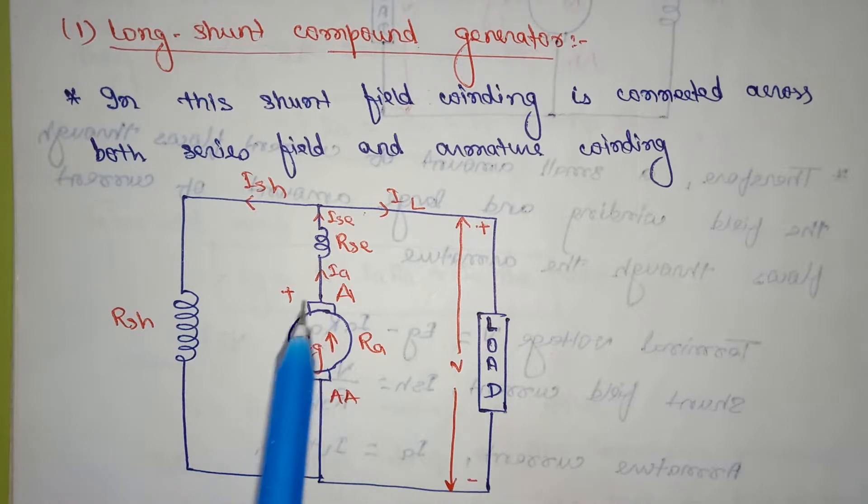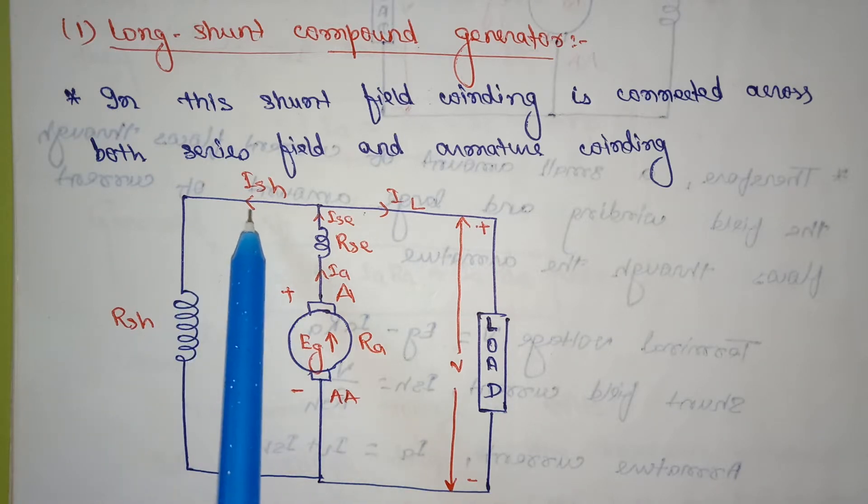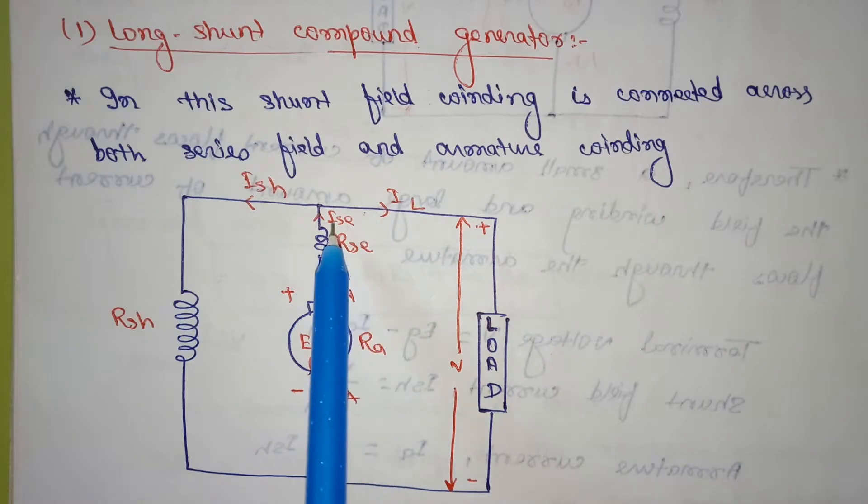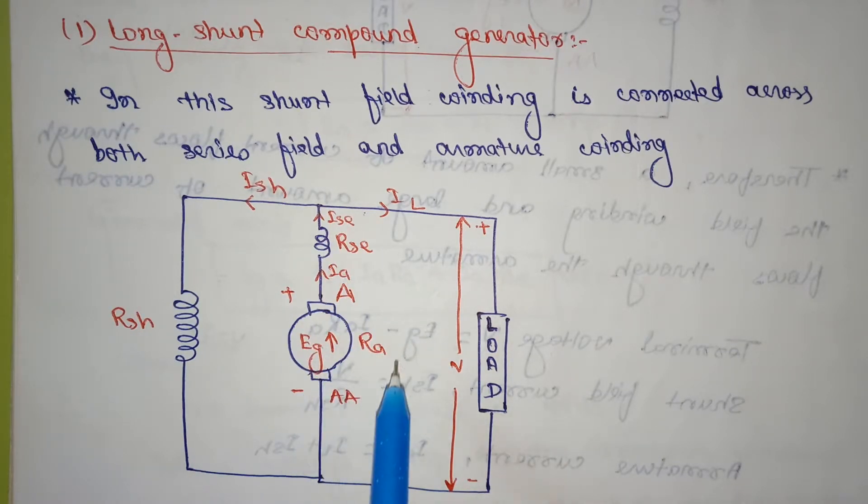So this is the shunt resistance, this is the shunt current, this is the load current, the series current, series resistance, armature current, generated emf, and this is armature resistance. From the diagram you can see here that Ise is equal to Ia.